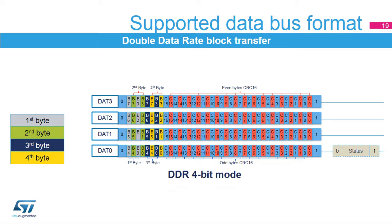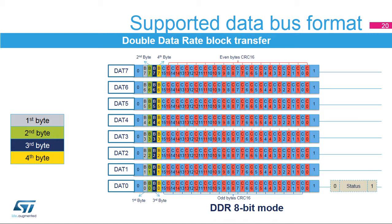When data is sent to the card, the card will return a full cycle CRC status on the SDMMC D0 pin. Double data rate mode is not available in 1-bit mode. In this example, the 4 bytes are sent over the SDMMC bus in double data rate 8-bit mode. For each SDMMC CK clock cycle, 2 bits are shifted out with a full block cycle start bit and end bit and odd and even CRC16 checksums on each data line. When data is sent to the card, the card will return a full cycle CRC status on the SDMMC D0 pin.